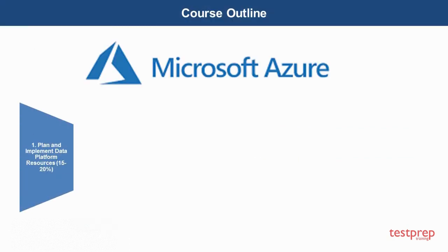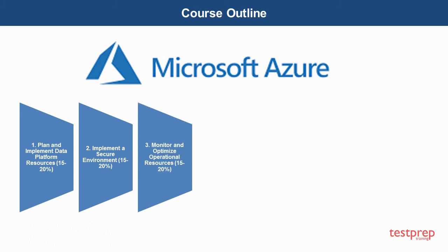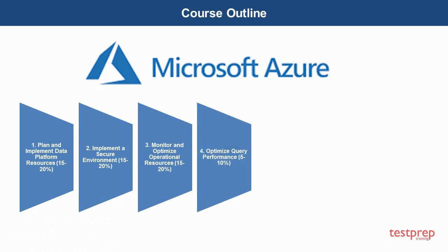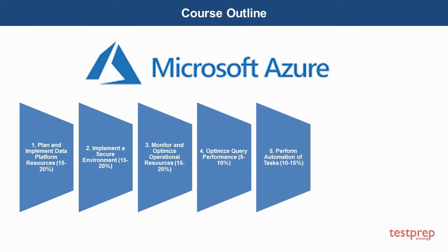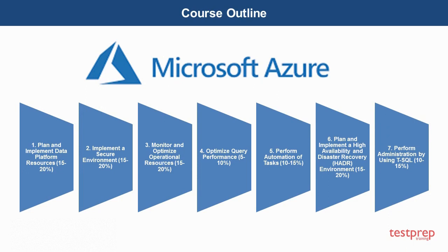Course outline: 1. Plan and implement data platform resources, which comprises 15–20% weightage in the exam. 2. Implement a secure environment, which comprises 15–20% weightage. 3. Monitor and optimize operational resources, which comprises 15–20% weightage. 4. Optimize query performance, which comprises 15–20% weightage. 5. Perform automation of tasks, which comprises 10–15% weightage. 6. Plan and implement a high availability and disaster recovery environment, which comprises 15–20% weightage. 7. Perform administration by using T-SQL, which comprises 10–15% weightage.